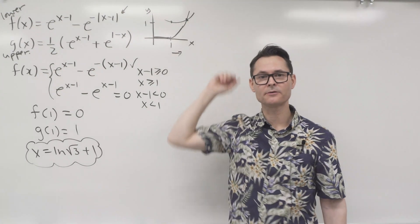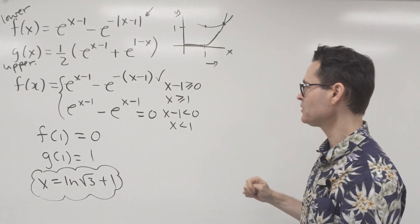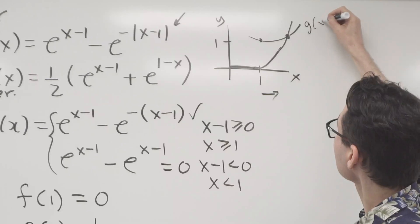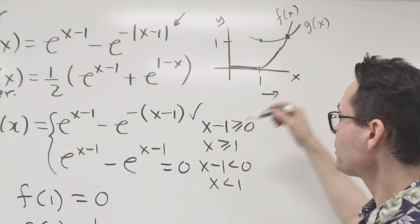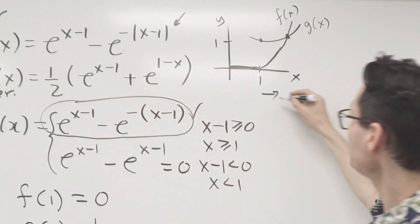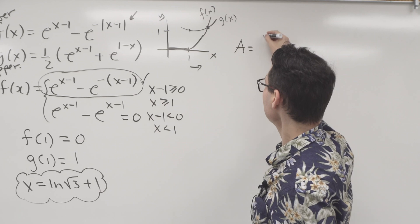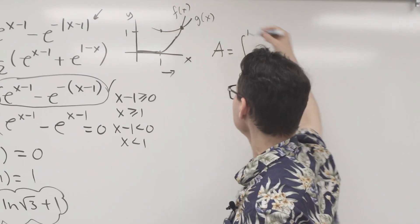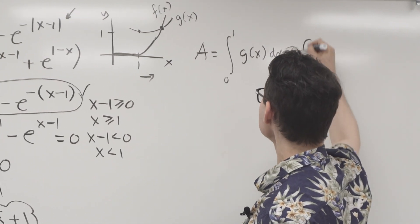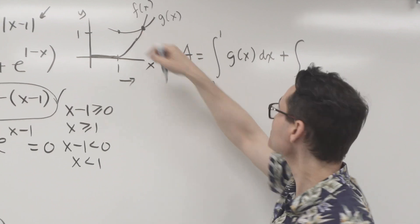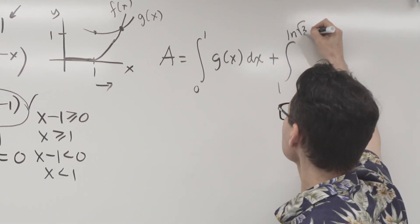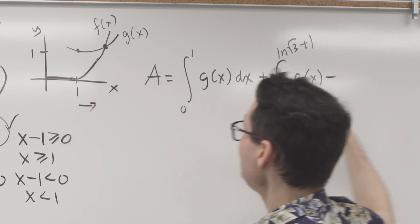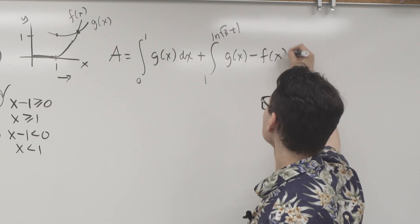Now we have a handle on what the upper and lower functions are, and we know the point of intersection as our limit of integration. The area is given by the integral from 0 to 1 of g(x) dx, added to the integral from 1 to ln(√3)+1 of [g(x) − f(x)] dx. From 0 to 1, I only care about the area under g. From 1 to the intersection, I subtract the upper function g(x) minus f(x).